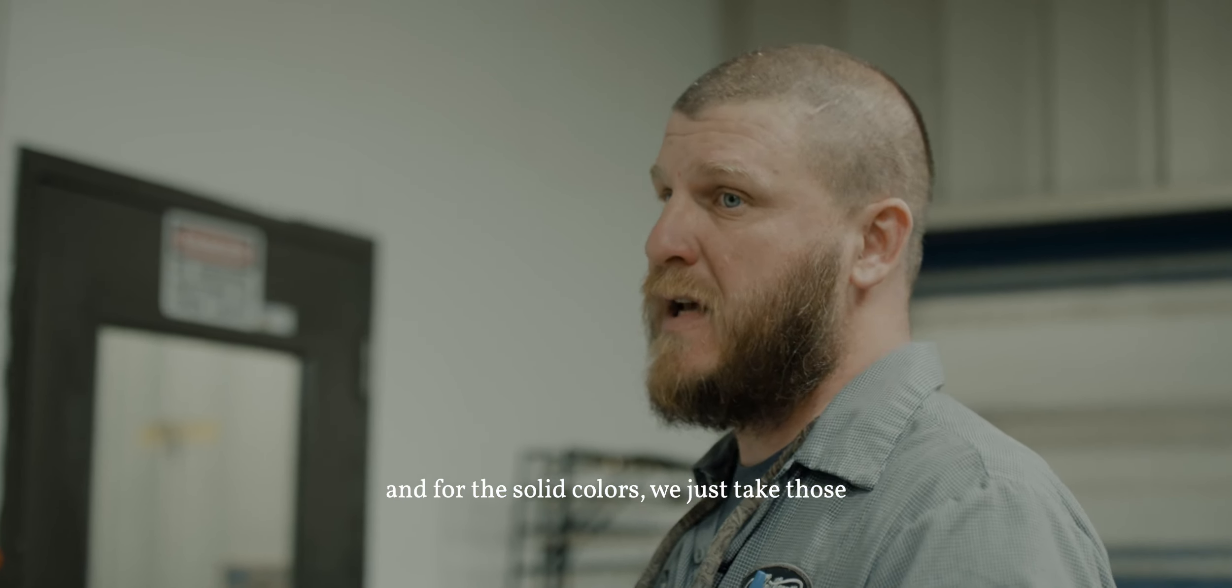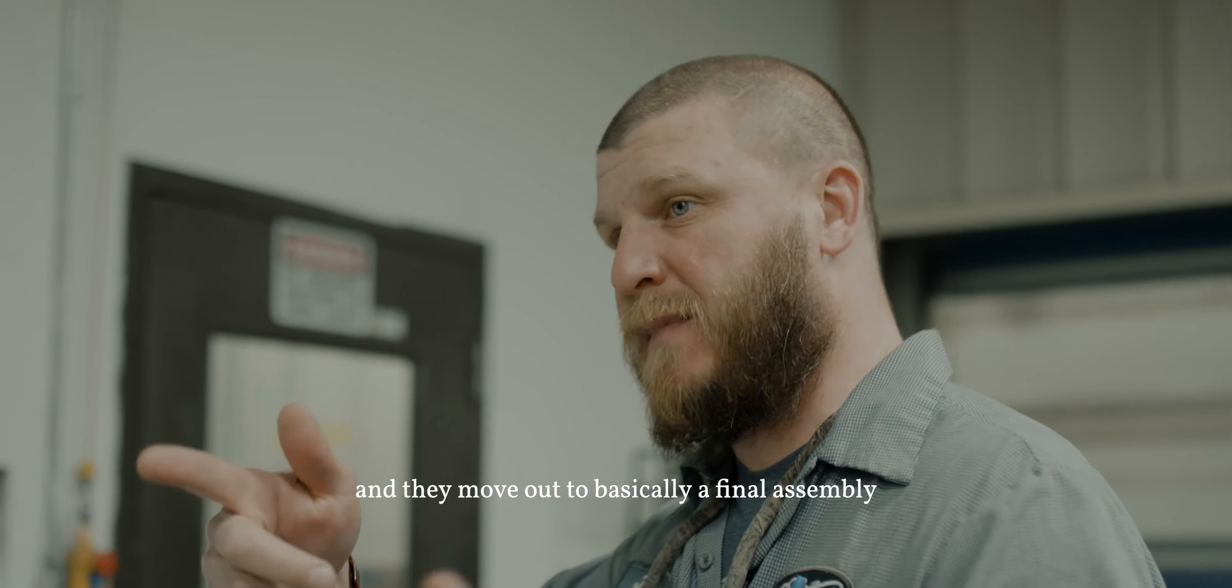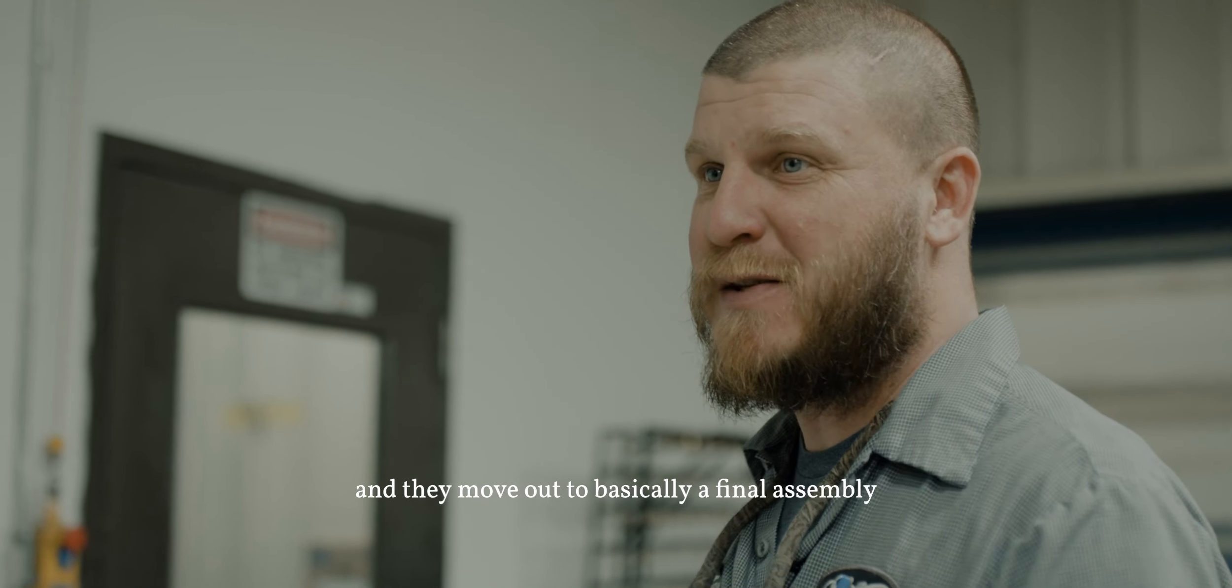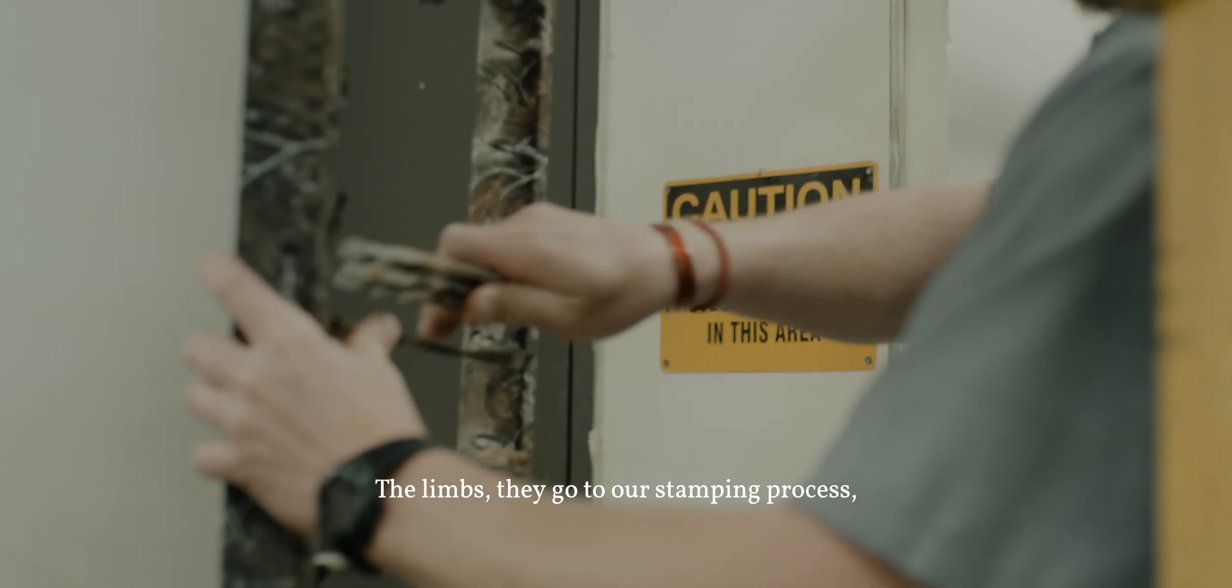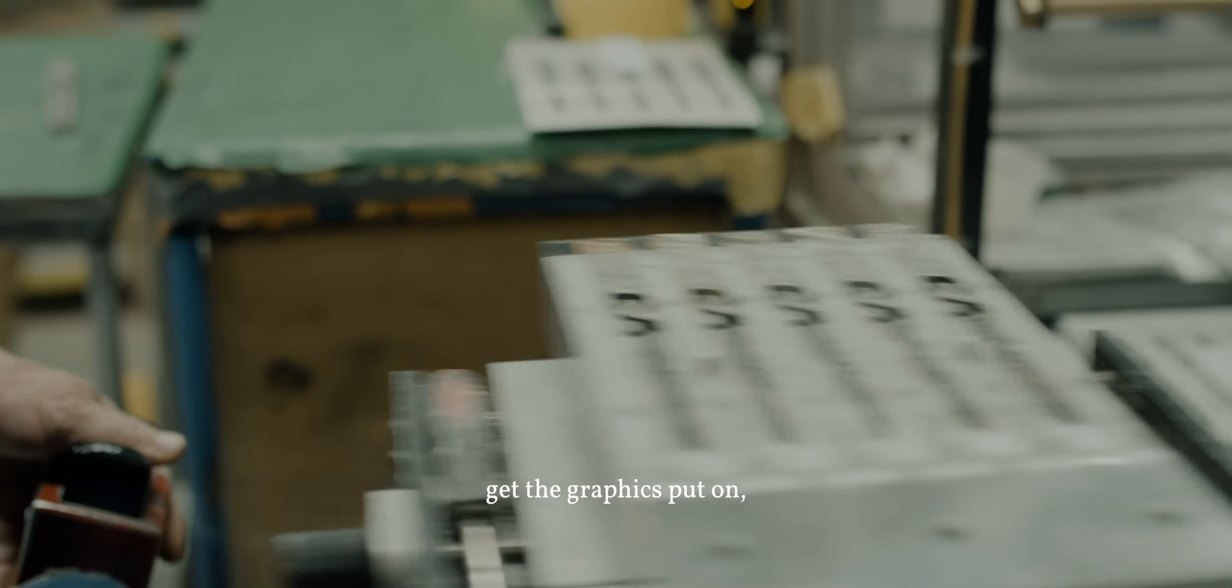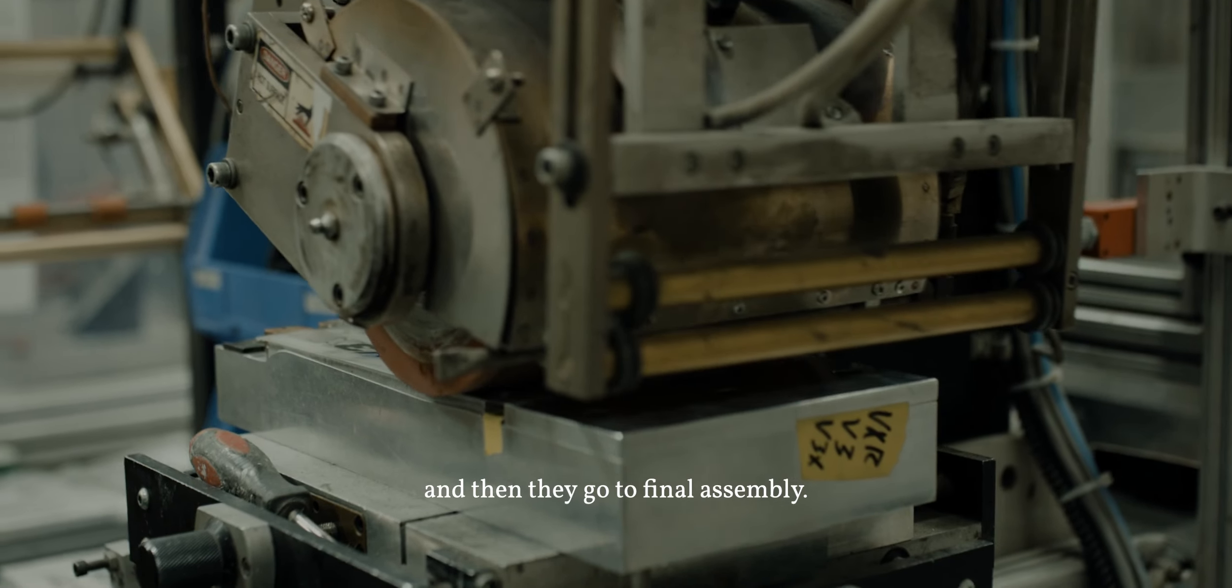And for the solid colors, we just take those off. They go to inspection and they move out to basically final assembly to get put together. The limbs, they go to our stamping process, get the graphics put on, and then they go out to final assembly.